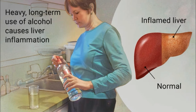Drinking Cessation. If a person is suffering from alcoholic hepatitis, the only way out is to quit drinking, as it reverses the liver damage and prevents it from worsening. If the person is heavily dependent on alcohol and wishes to quit, there are several ways that can help, including medication, counseling, support groups, and residential treatment programs.